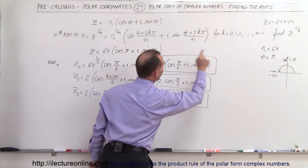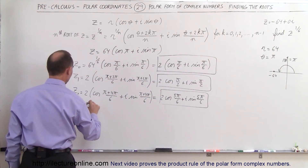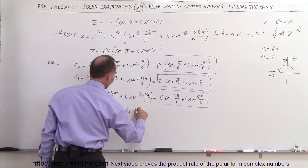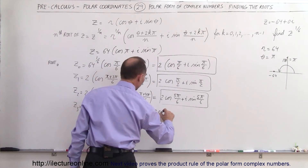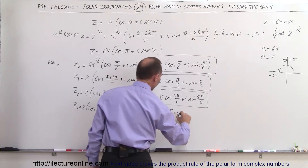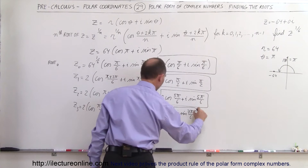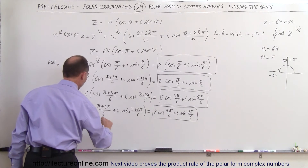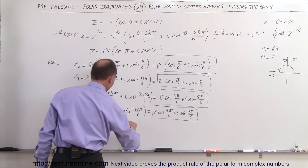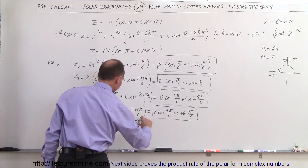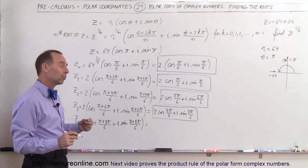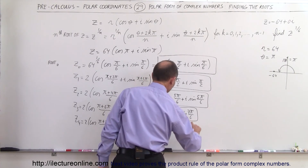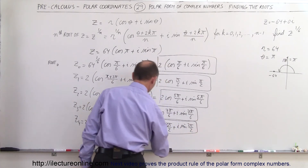Letting k equal 3, z sub 3 equals 2 times the cosine of pi plus 6 pi over 6, plus i times the sine of pi plus 6 pi over 6, which gives 7 pi over 6. For k equal 4, z sub 4 equals 2 times the cosine of pi plus 8 pi over 6, giving 9 pi over 6. Since 9 and 6 share a factor of 3, that simplifies to 3 pi over 2. So z sub 4 equals 2 times the cosine of 3 pi over 2, plus i times the sine of 3 pi over 2.